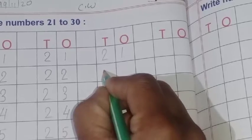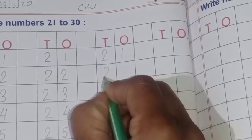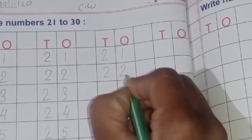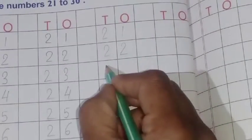What is spelling 22? T-W-E-N-T-Y, twenty. T-W-O, two. Next spelling 23.